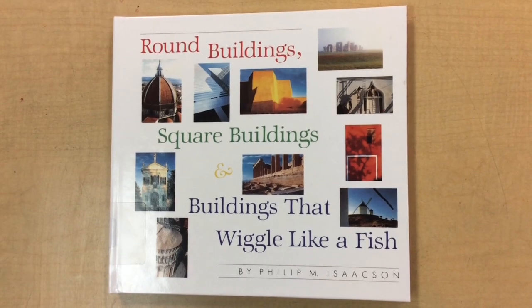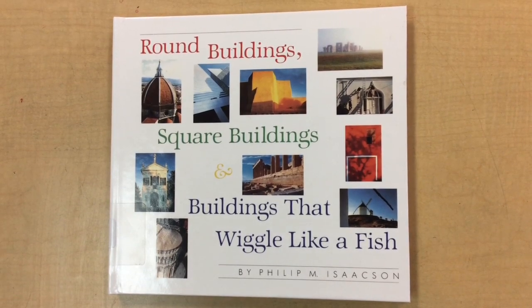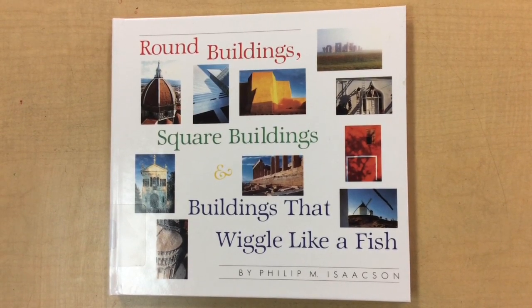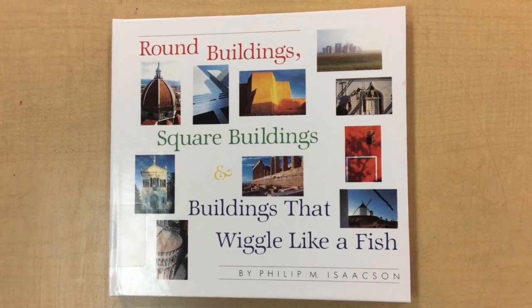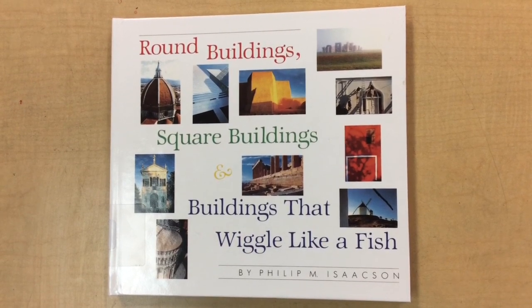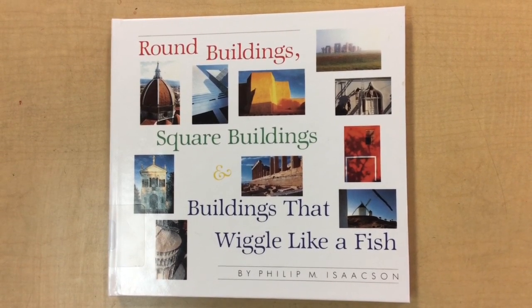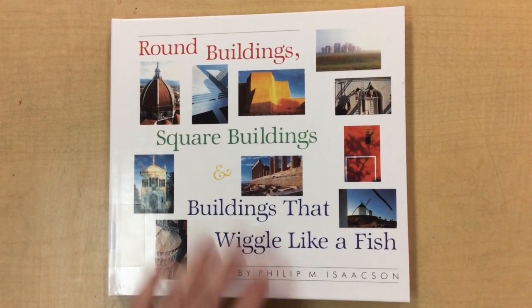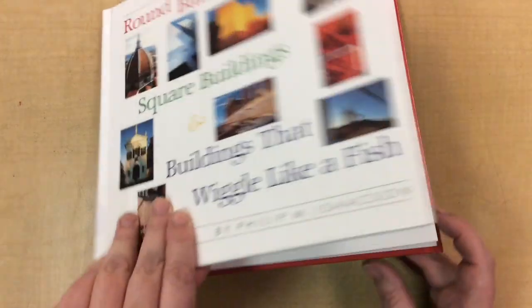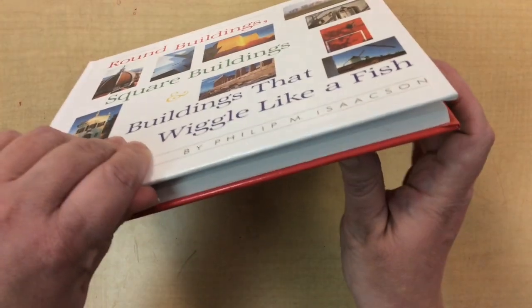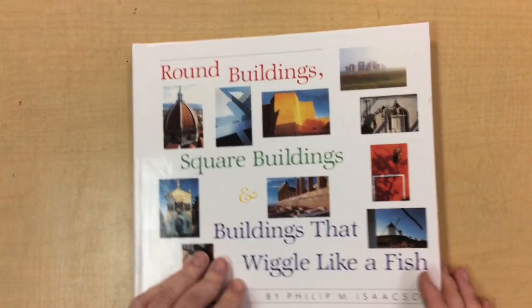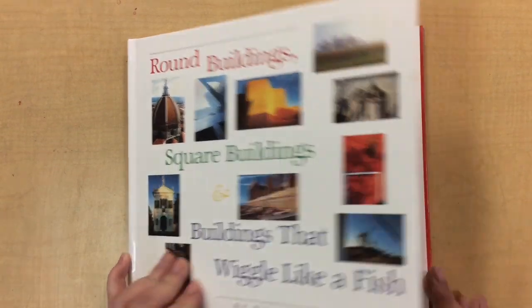Hi friends, today we're going to be looking at a book called Round Buildings, Square Buildings and Buildings That Wiggle Like Fish. We're going to be making a model today. I wanted to show you this book because there are some really interesting shapes that architects utilize when they're creating buildings. We're just going to look through it. It's a pretty thick book so I'm not going to read most of the words — I'm just going to look at the pictures. Let's get started.